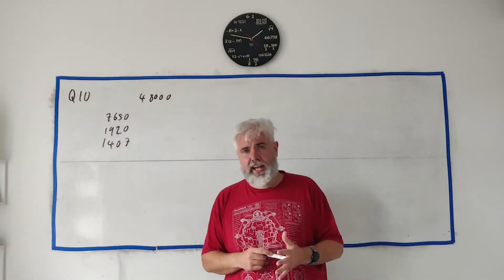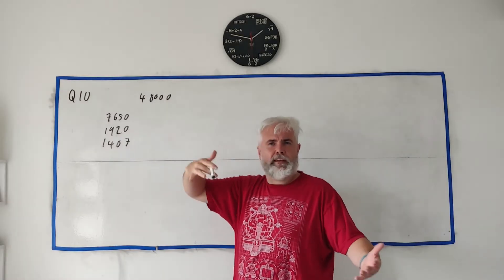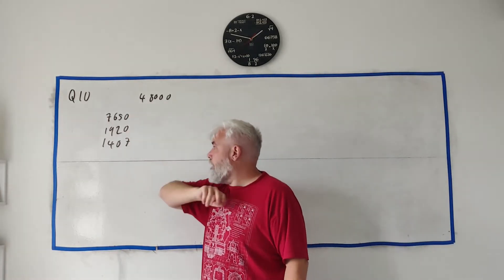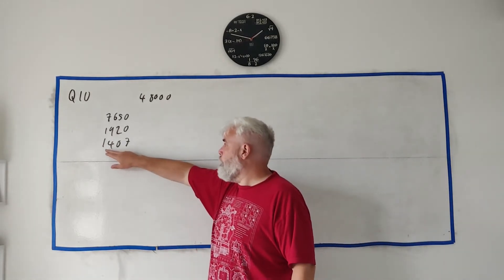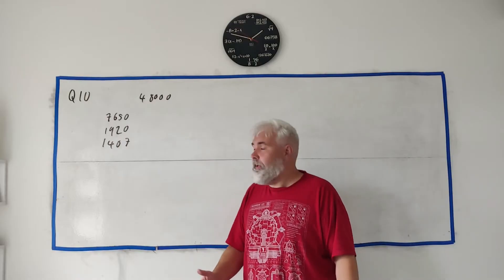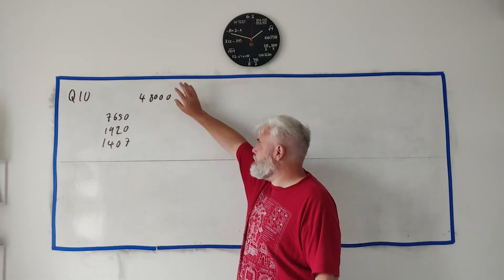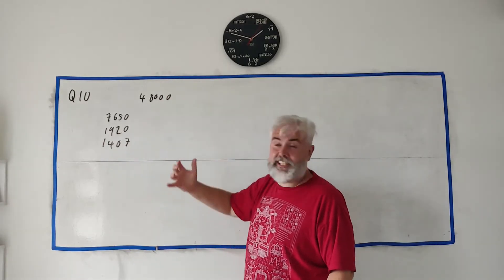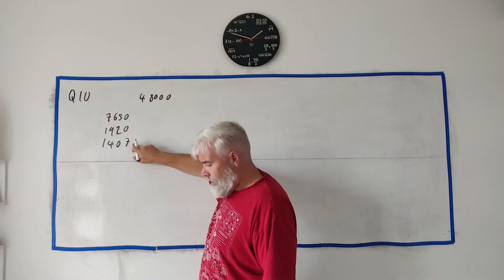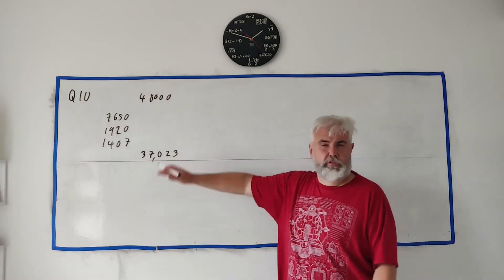Question 10 is a collection of tax questions. Part A starts with Joseph who has a gross income of €48,000. He pays income tax €7,650, PRSI €1,920, and USC €1,407. They ask what is his net annual income. Your net annual income is how much money actually gets into your bank account. So it's his gross income minus these three taxes. On your calculator, €48,000 minus €7,650 minus €1,920 minus €1,407 equals €37,023.